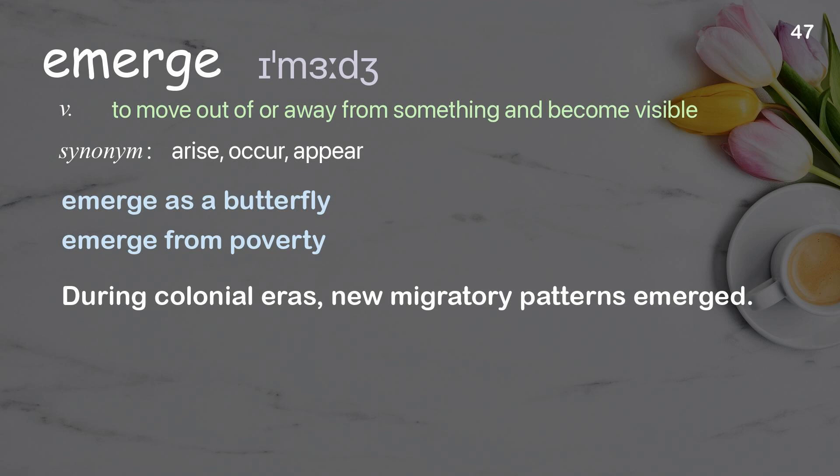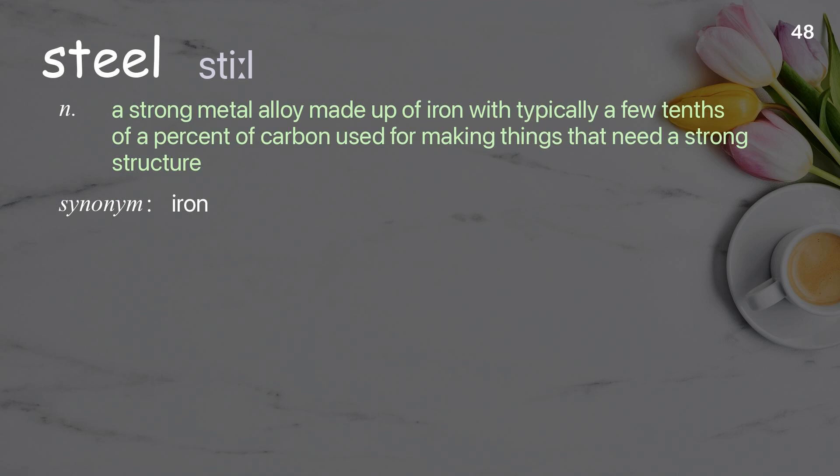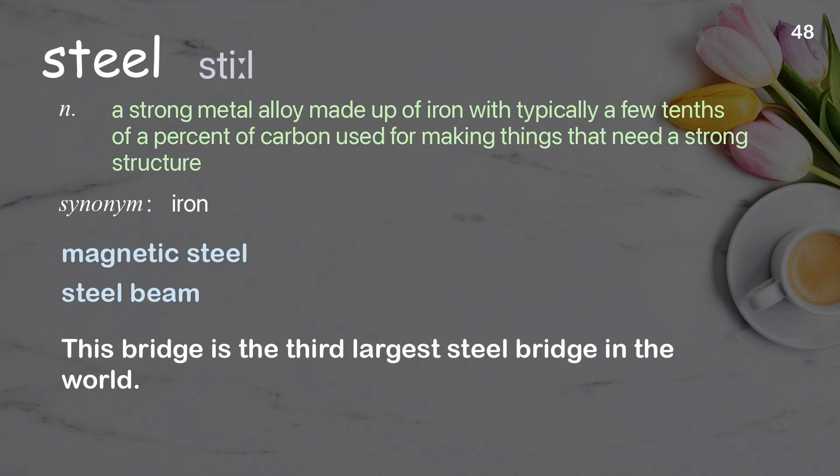Steel: a strong metal alloy made up of iron with typically a few tenths of a percent of carbon, used for making things that need a strong structure. Examples: magnetic steel, steel beam. This bridge is the third largest steel bridge in the world.